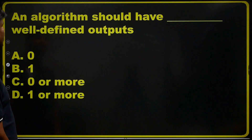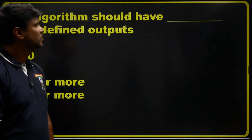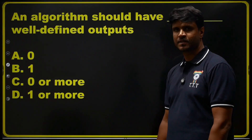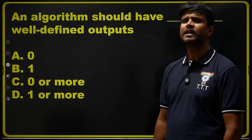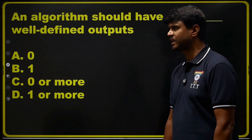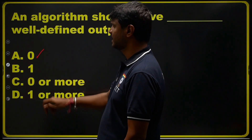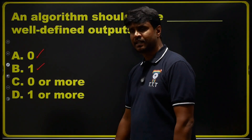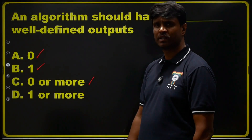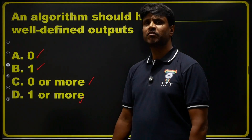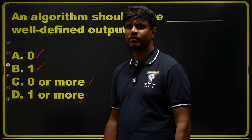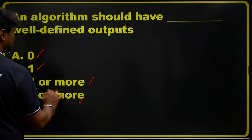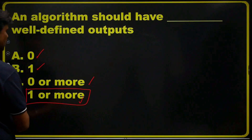An algorithm should have dash well-defined outputs. The options are: zero, one, zero or more, and one or more. Obviously, the output should be one or more. So the correct answer is one or more.